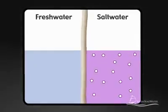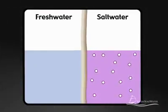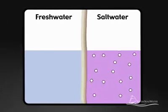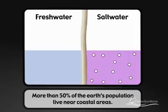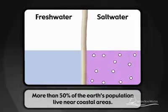Osmosis is a naturally occurring process where a solvent, such as water, passes through a semi-permeable barrier. The semi-permeable barrier, or membrane, allows some things to pass through it but not others.